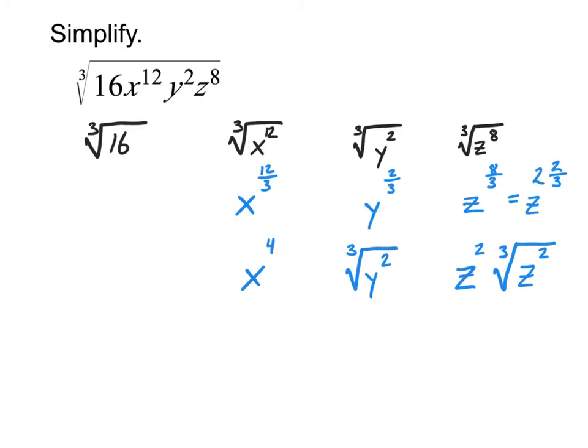Now the last thing we have left to deal with here before we put all of our pieces back together is the cube root of 16. For dealing with the cube root of 16, this is where you actually have a couple different options, just like we did when simplifying square roots. One option is that you could make a factor tree for 16. And if you did that, then you'd end up with the cube root of two times two times two times two.